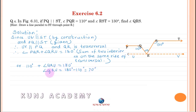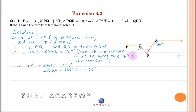Therefore angle QRU equals 70 degrees. Now, ST is parallel to UV and SR is a transversal, therefore angle URS equals angle TSR — alternate angles.